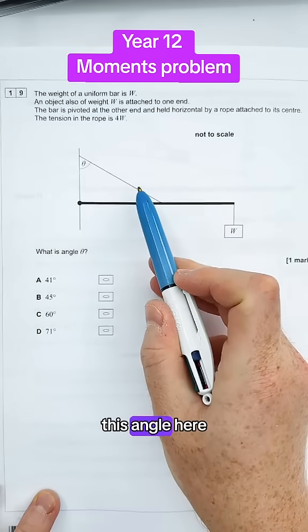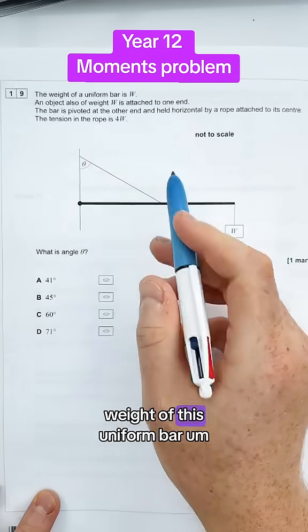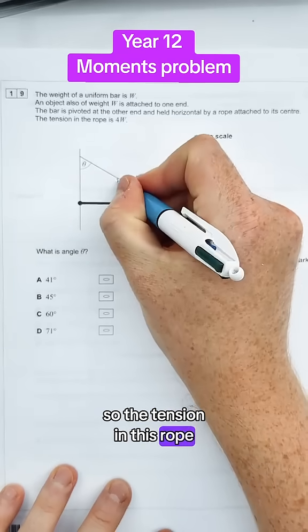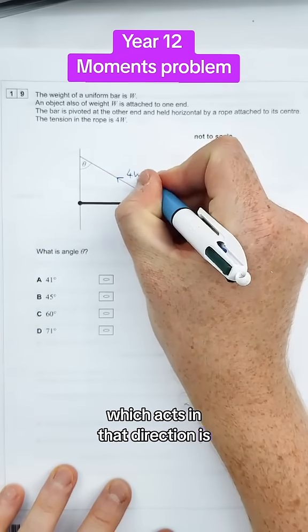So we're trying to figure out this angle here. The information we have is the weight of this uniform bar, and we also have a weight attached at the end here. So the tension in this rope, which acts in that direction, is 4W.